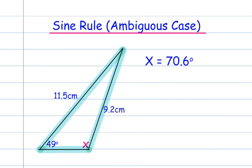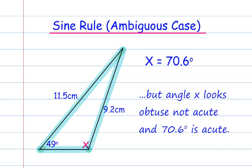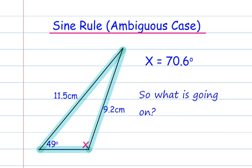So there's our answer. Looking at the diagram closely, X looks obtuse, not acute, and 70.6 degrees is acute. This looks too big. So what's going on?